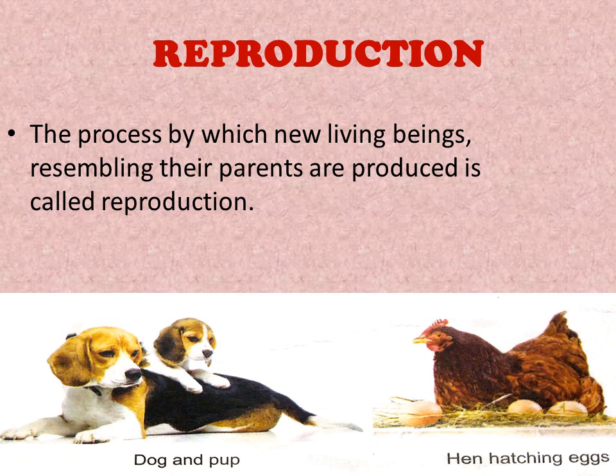In the second picture, you can see that a hen is laying eggs. And from these eggs, the chick or the baby comes out. So these are the two methods of reproduction. We will be discussing each of them briefly.